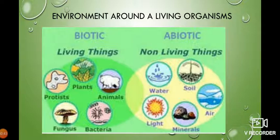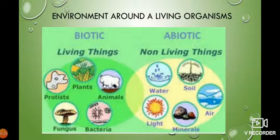The environment around a living organism can be divided into two components: the biotic and the abiotic. The biotic component consists of all living things, which includes plants, animals, and very small living things that you can't see — the fungi, bacteria, everything.